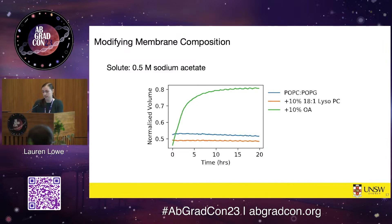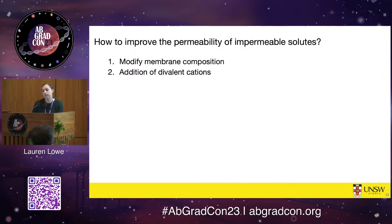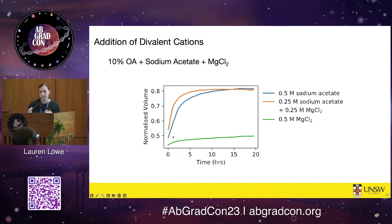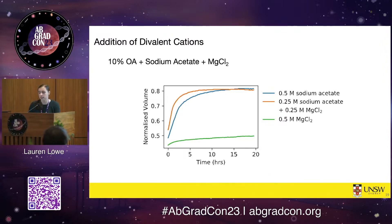Since the membrane composition strategy didn't broadly work, I tried a second strategy: the addition of divalent cations. In literature it's well established that divalent cations affect the packing of lipid molecules in bilayers. Again, generally it didn't make much difference, except with sodium acetate. With the 10% oleic acid system and sodium acetate, adding magnesium chloride — shown in orange — showed an improvement in permeability, with that curve increasing faster than the blue line of pure sodium acetate or the green line of magnesium chloride alone. For whatever reason, the combination of magnesium chloride, sodium acetate, and 10% oleic acid did improve permeability overall. But generally, across most of the other solutes I tried, it was quite difficult to achieve, and I've tried other divalent cations too.